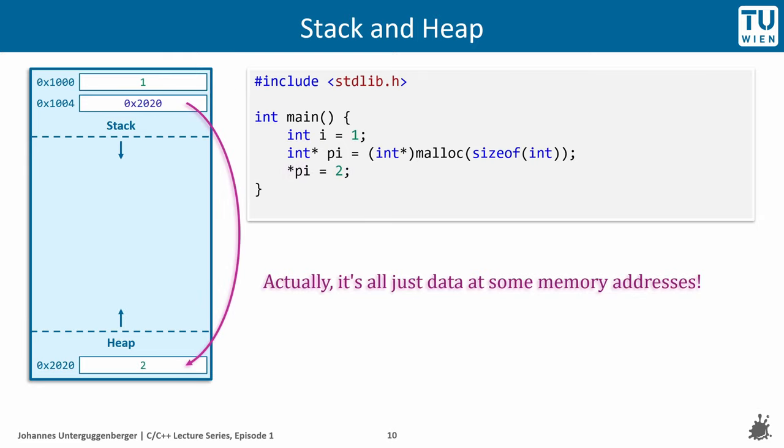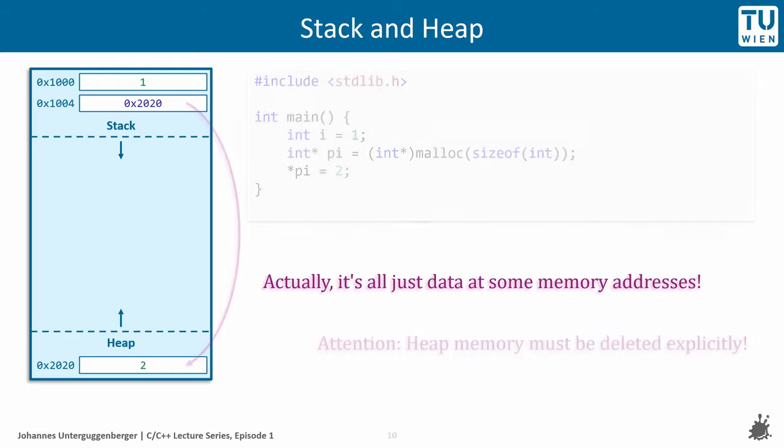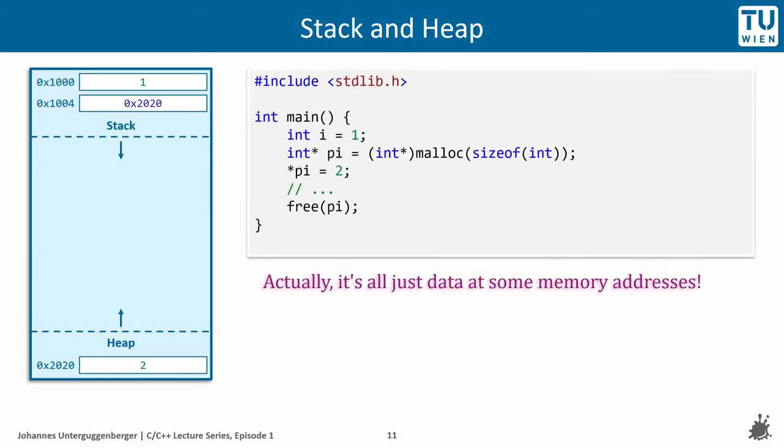There is a problem with this code. It produces a memory leak. The reason is because the heap memory is never freed. But heap memory must be freed or deleted explicitly. And in order to do that, we can use the free function, which is the cleanup counterpart to malloc.